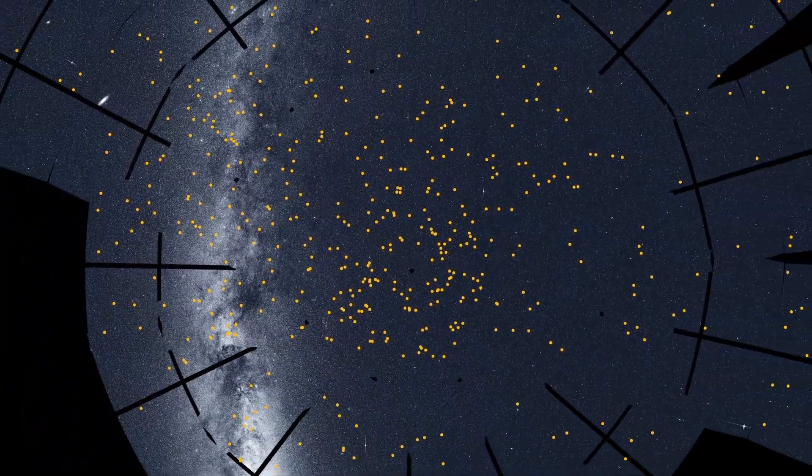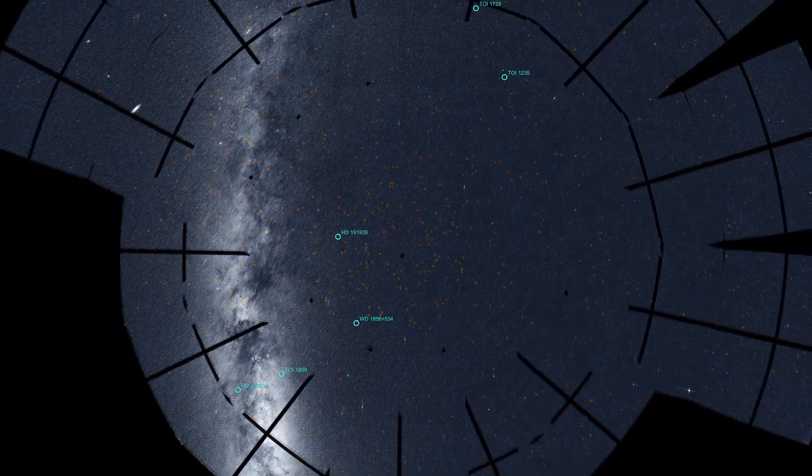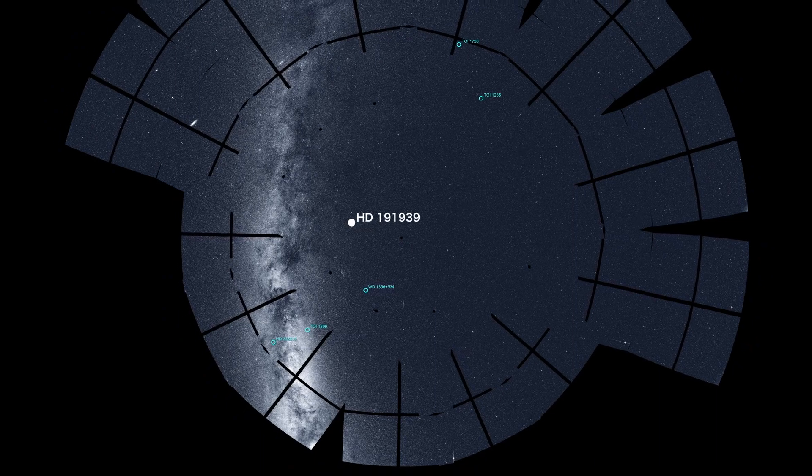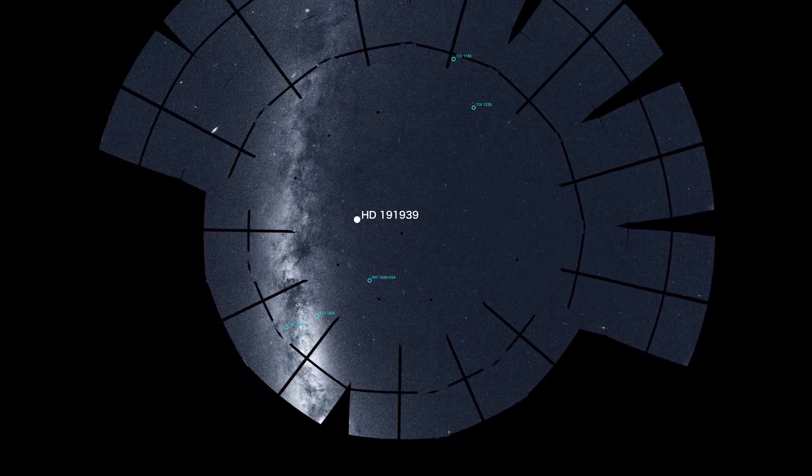TESS has already found a few northern stars hosting planets. One, named HD191939, possesses a trio of Neptune-size worlds.